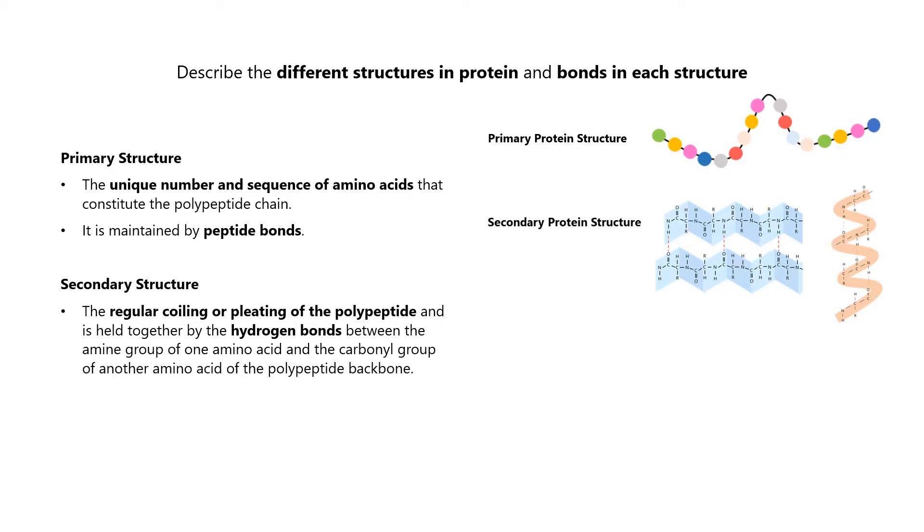The secondary structure refers to the regular coiling or pleating of the polypeptide and is held together by the hydrogen bonds between the amine group of one amino acid and the carbonyl group of another amino acid of the polypeptide backbone.